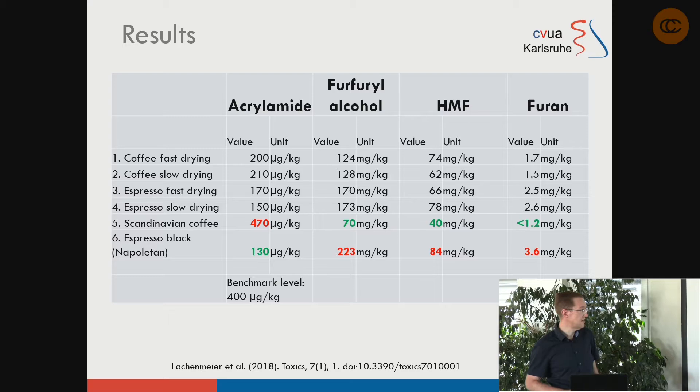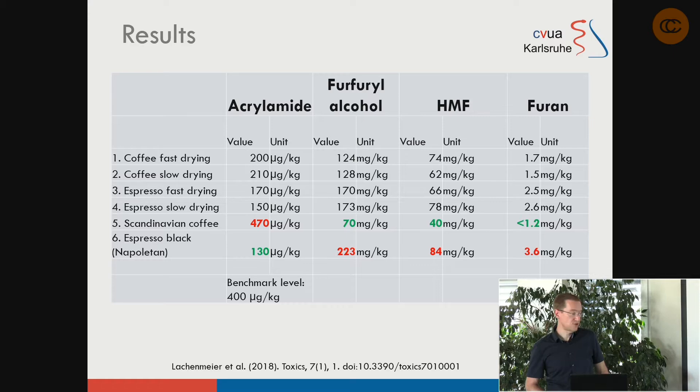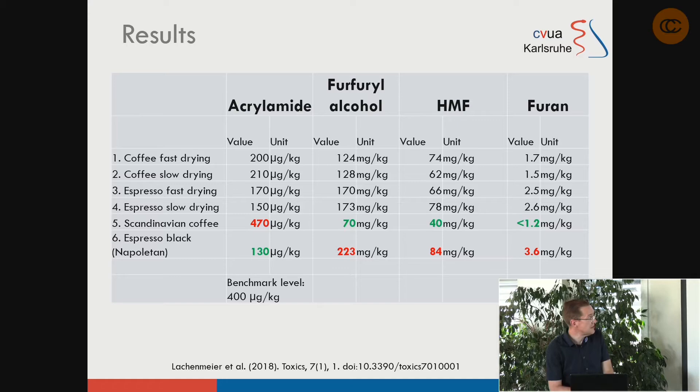So if you are doing a normal roast, you are probably not in danger of exceeding the benchmark level. Only if you do a very fancy very light roast should you really check acrylamide levels in your sample. Now the problem: the other contaminant, furan, is similarly carcinogenic to acrylamide but behaves in the opposite way.